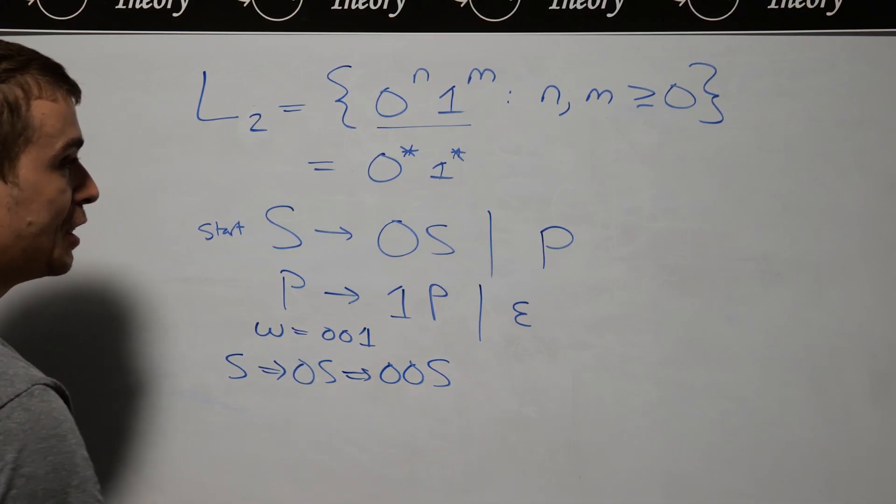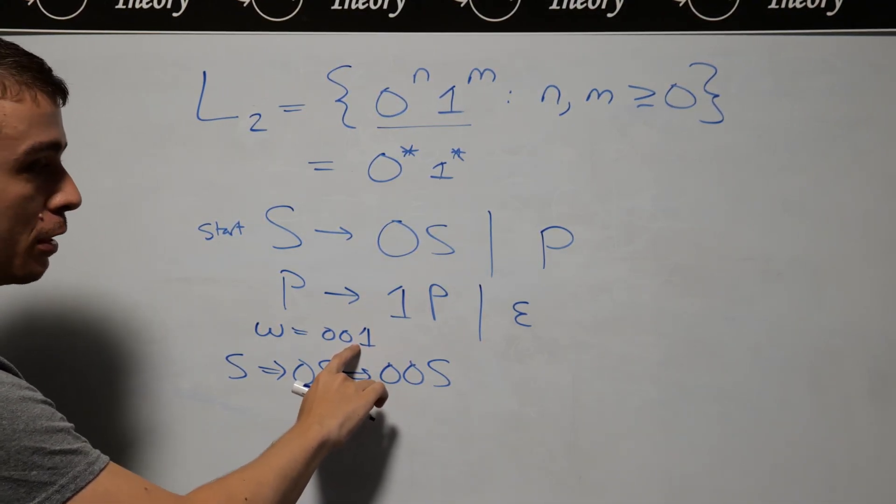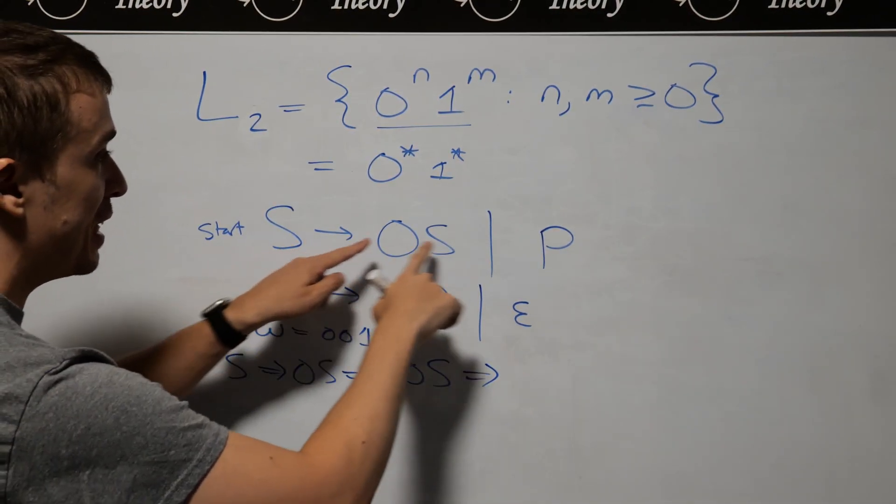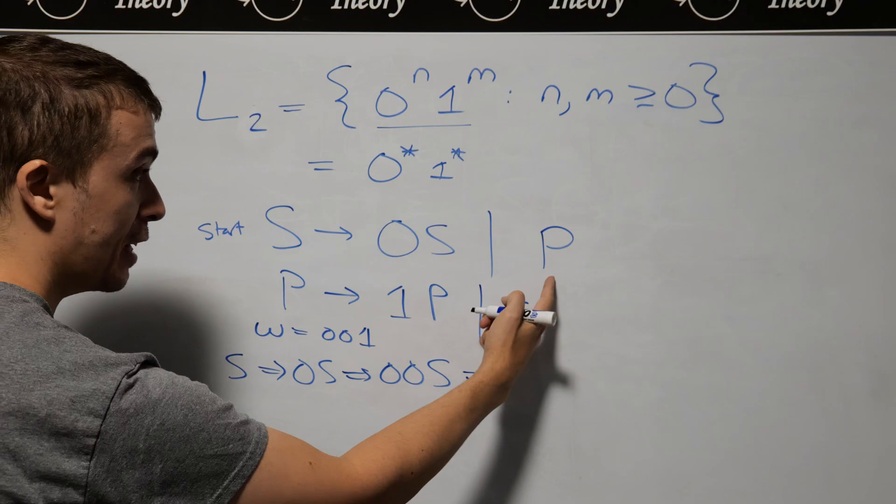Then now I'm done generating the zeros, I need to switch over to the ones. So I'm going to now replace this S with P, applying this rule this time. So 00P looks like object-oriented programming.